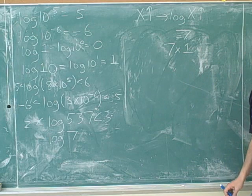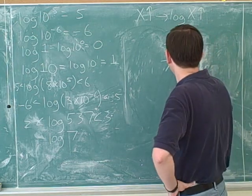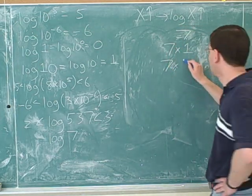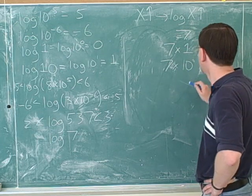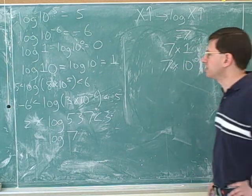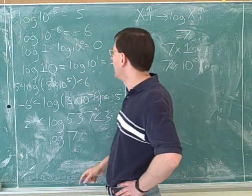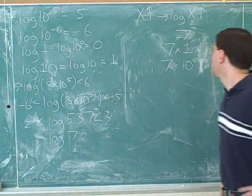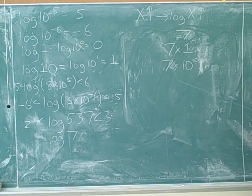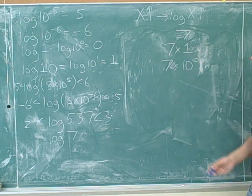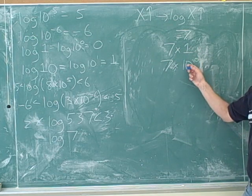Seven is really seven times one. And what power of ten is one? Zero. That's the key trick that you came up with. We can re-express one as ten to the zero. So here we had two ideas: first, expressing seven as seven times one, and then seeing that one is ten to the zero.